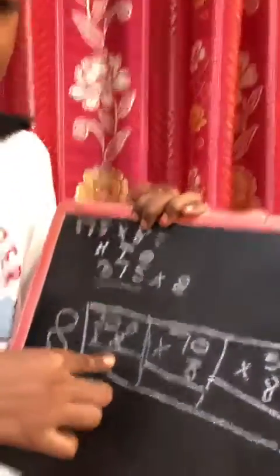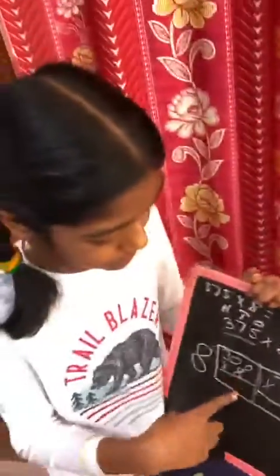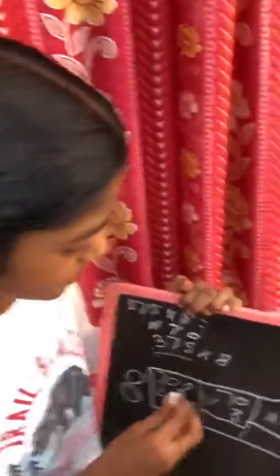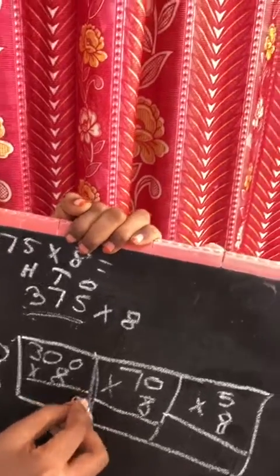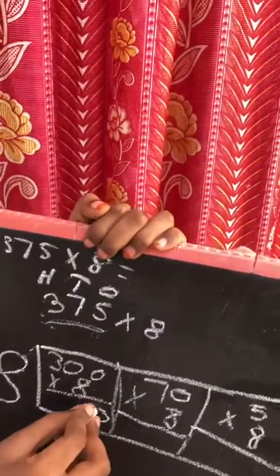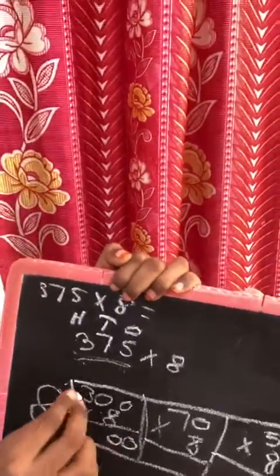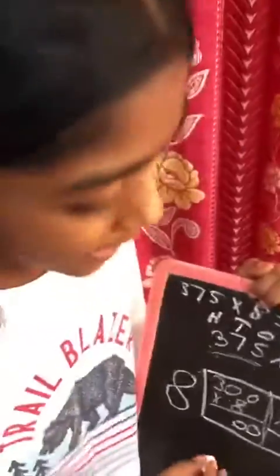300 times 8: How you do it is there are 2 zeros, so put 2 zeros. Then do 3 times 8.